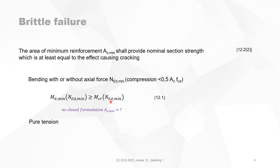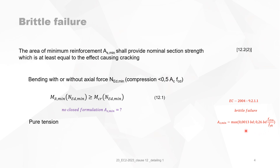There is no closed formulation for AS min, so you have to find it out for yourself. As a reminder, in Eurocode 2 version 2004, clause 9.2.1.1 for brittle failure, the minimum reinforcement was given by a closed formulation: the maximum of 1.3% of BD and 0.26·BD·FCTM divided by FAK. This is very useful and easy to use. Formula 12.1 doesn't even mention AS min in the formulation.